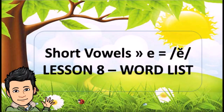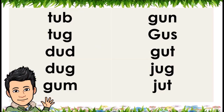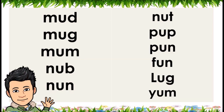Short vowels: E equals E. Lesson 8. Word list: Tub, tug, dud, dug, gum, gun, gus, gut, jug, jut, mud, mug, mum, nub, none, nut, pup, pun, fun, lug, yum.